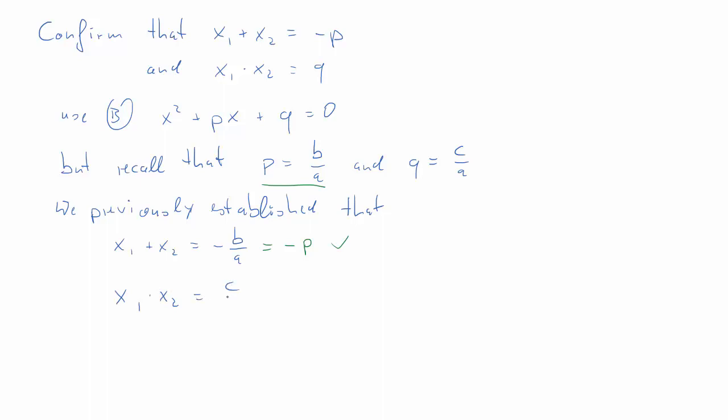And then the product of the two roots we established to be equal to c over a. Now c over a is just q. So that's a very straightforward way to solve that if you've previously solved the other problem.